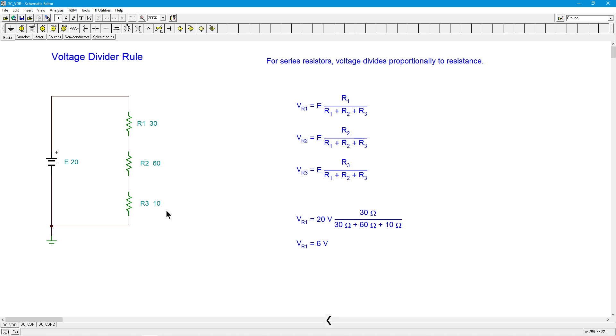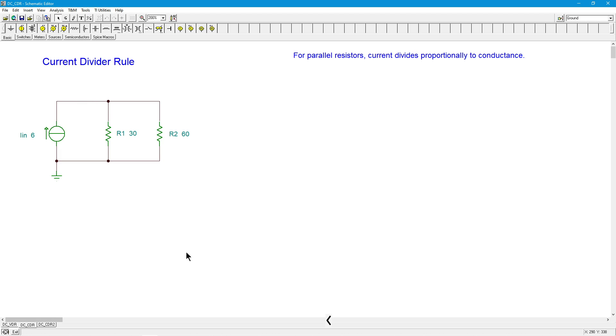Is there something that we can do like that for current? Well, you know, if there wasn't, I wouldn't be doing the video. That's my old joke. So let's take this example. I've got a current source, IN, it's 6 amps, and I've got two resistors, R1 and R2, 30 ohms, 60 ohms.